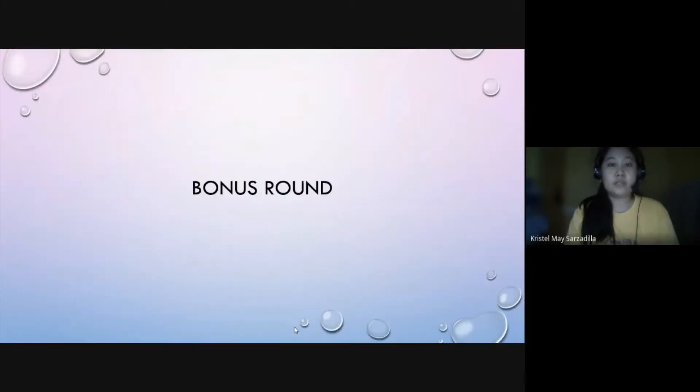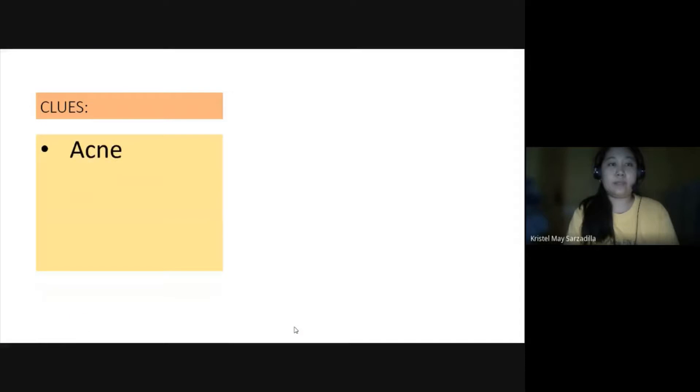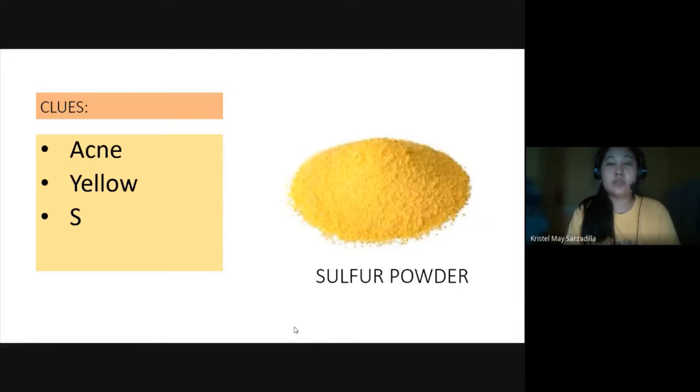Let's have the bonus round. Acne, yellow, chemical symbol is S. What is it? It's sulfur powder. But I don't think you have it in your homes. But sulfur powder is integrated or mixed in soaps as treatment for acne.